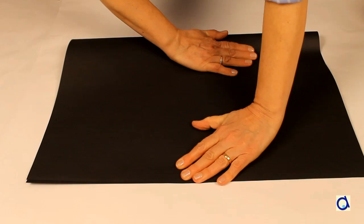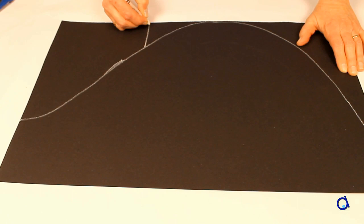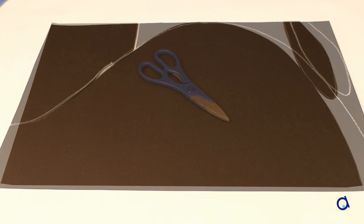Start by folding the sheet of Bristol paper in half. Draw the body of the whale which will occupy the greatest part of the half sheet. Then on one side, draw the tail. If necessary, refer to the diagram in the free printable document.